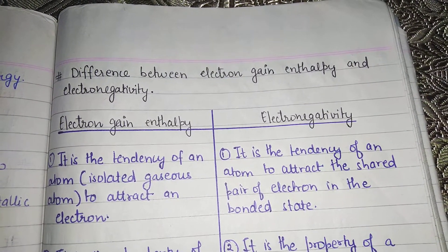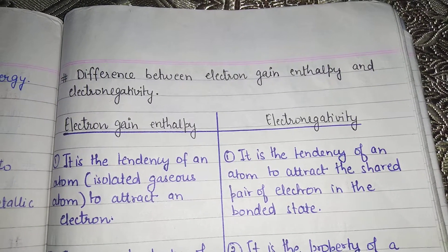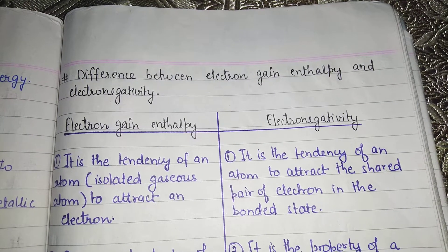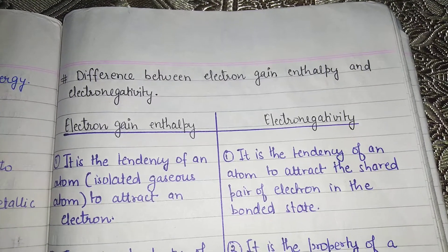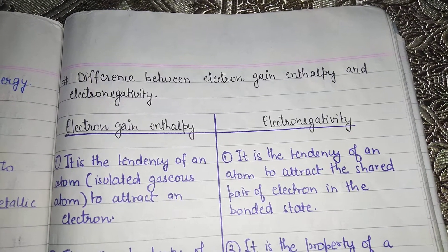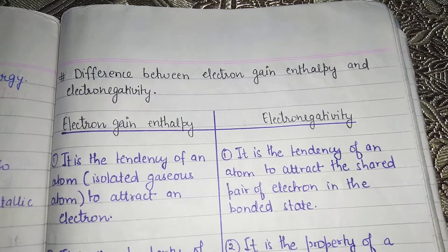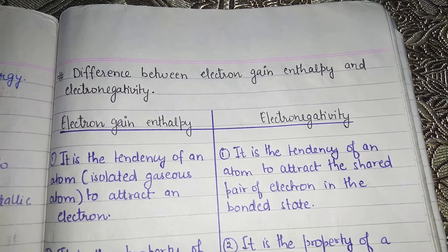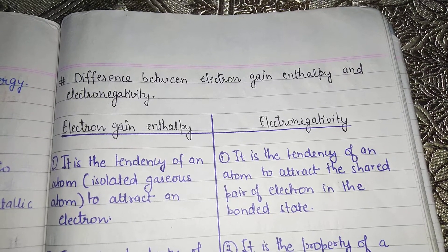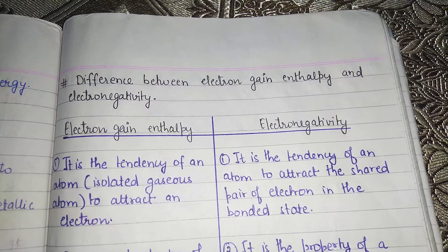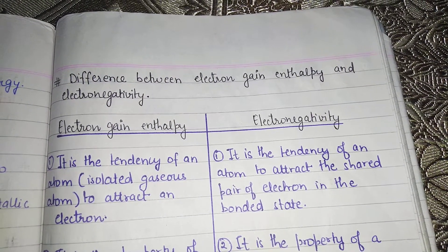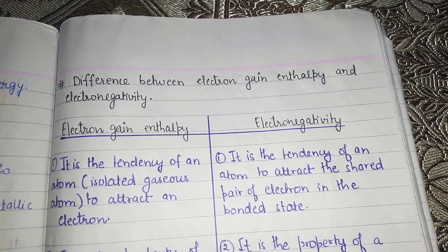Whereas electronegativity is a concept in the case of the bonded state. It is the tendency of an atom to attract the shared pair of electrons in the bonded state. When electrons are present in the bonded state, it measures how much the electron cloud is pulled towards the atom.